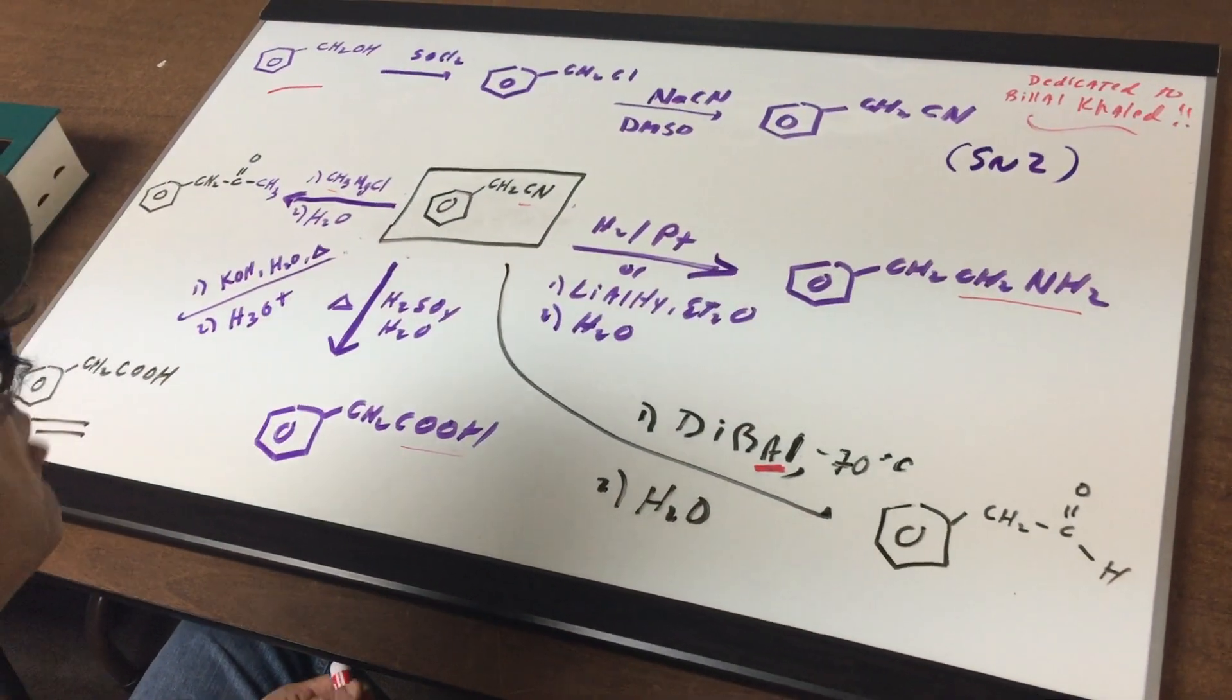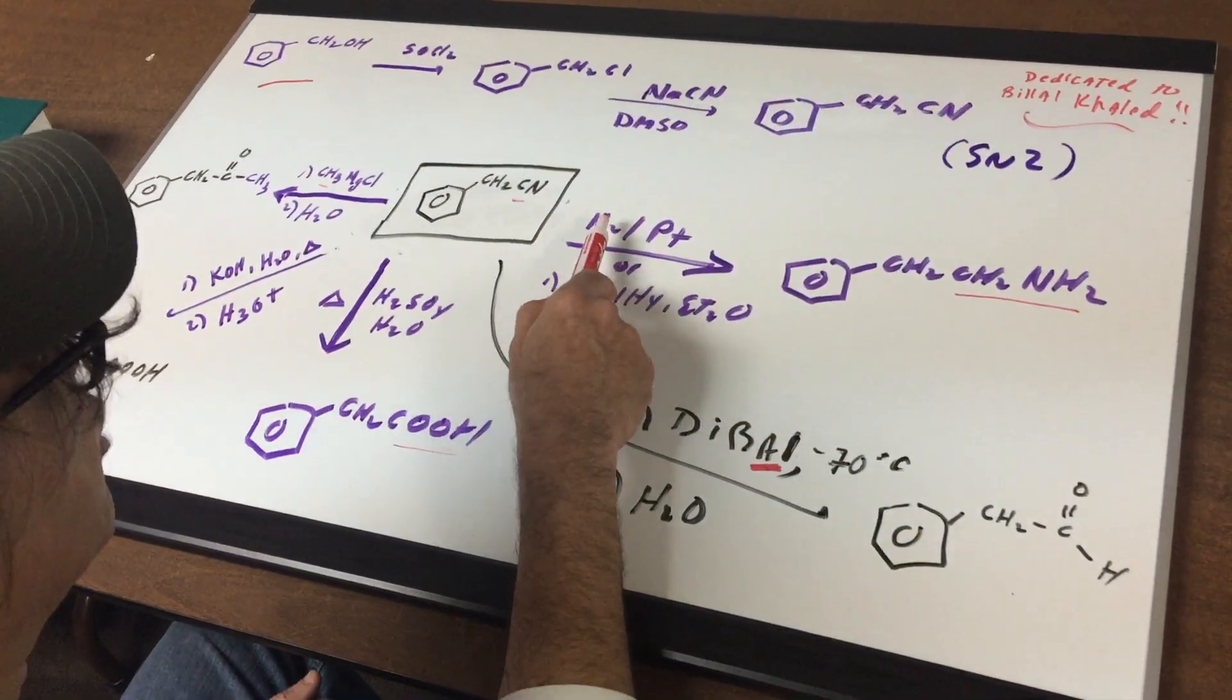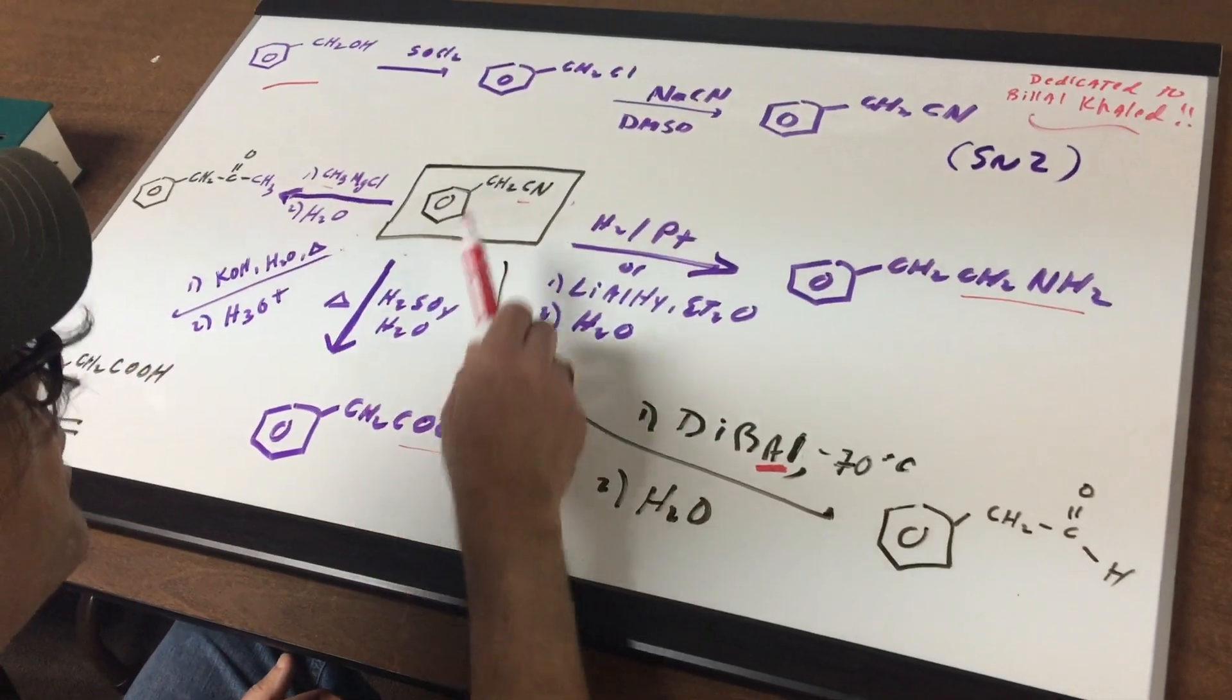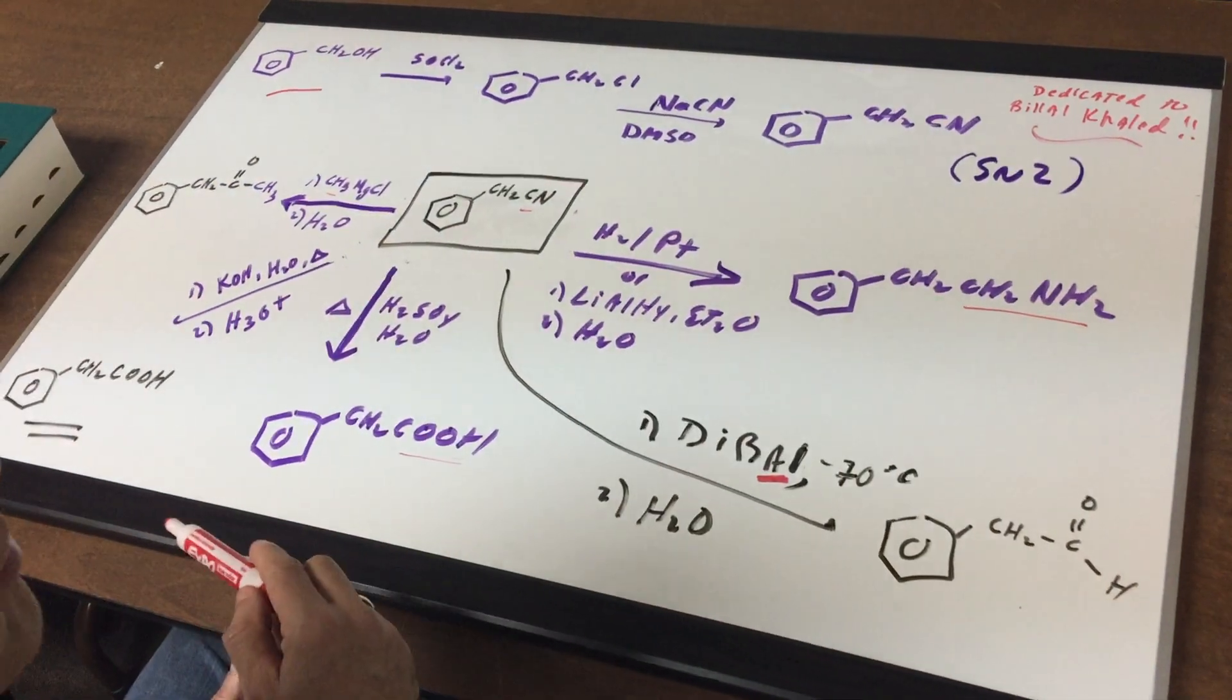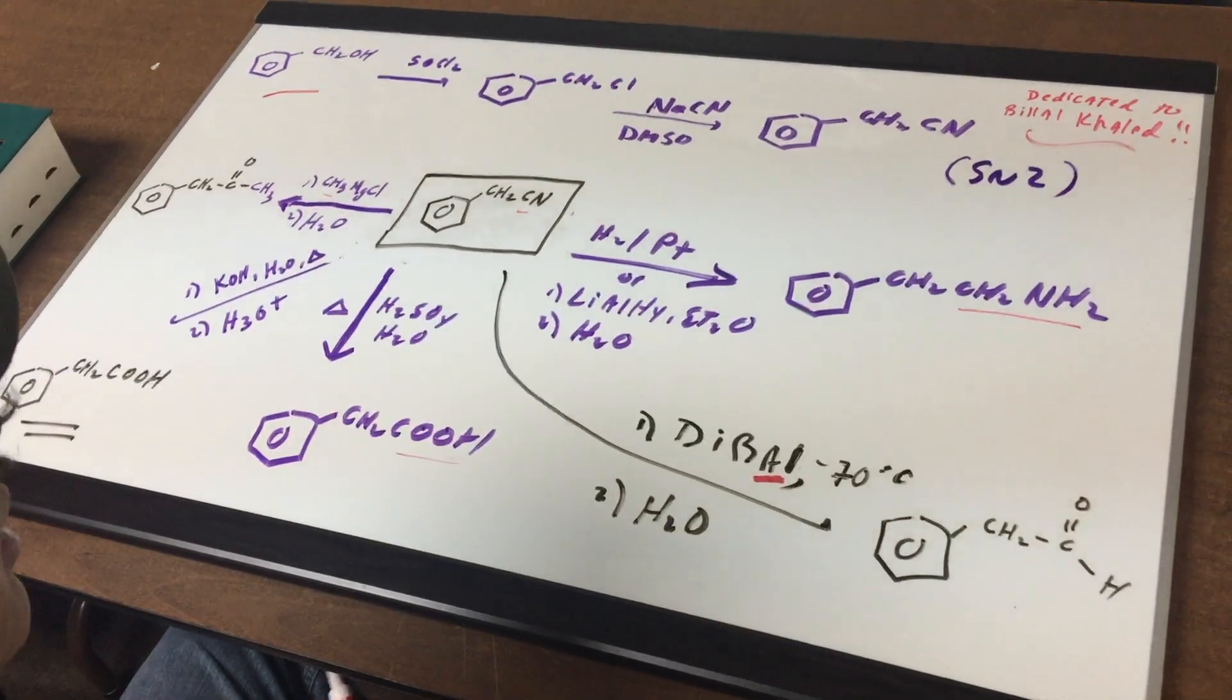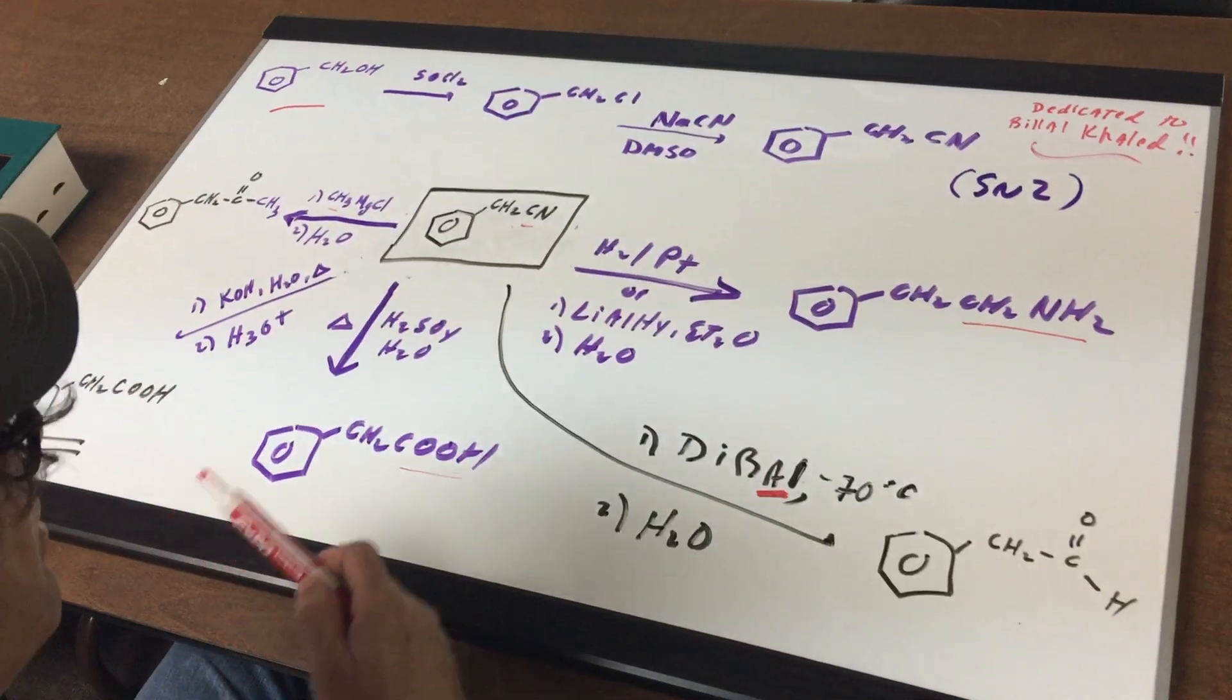Nitriles aren't terribly reactive, so there's not a million reactions you need to know. The first one, I'm going to do a reduction. Hydrogen and platinum or lithium aluminum hydride will simply take the nitrile, break the triple bond, and add H's across both the C and the N, and that would add on the CH2 and H2. So nitrile reduction, in this case, gave me my primary amine.